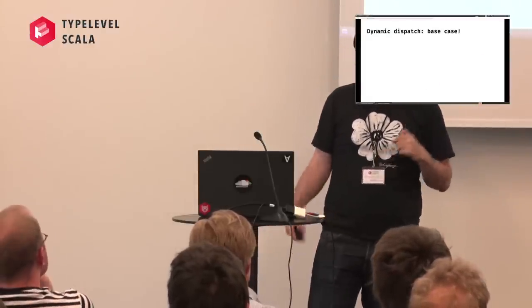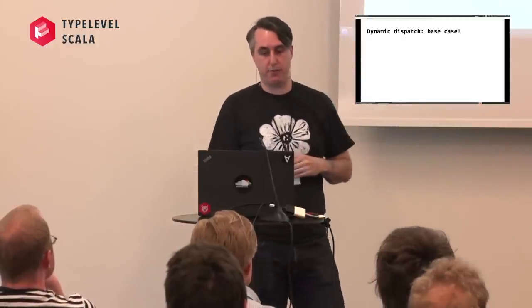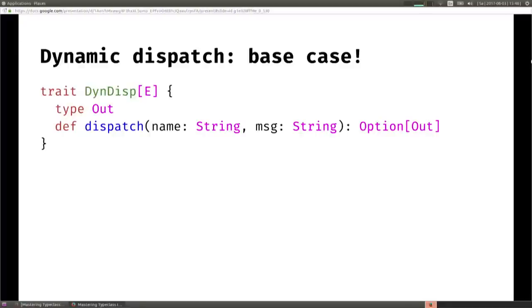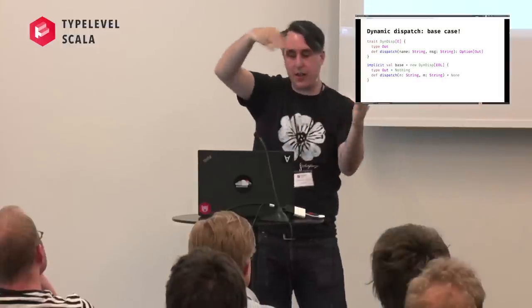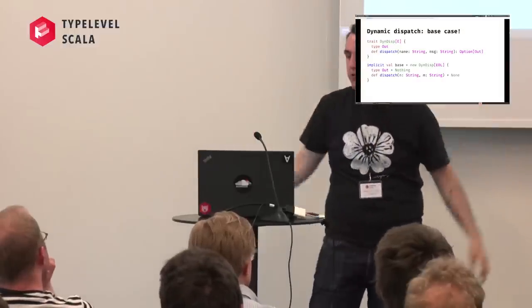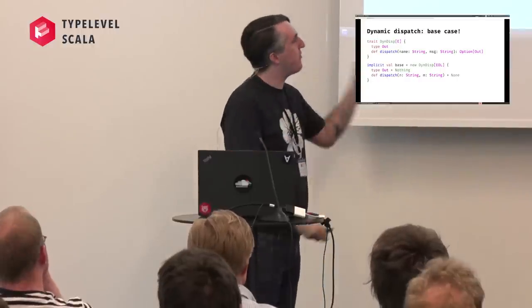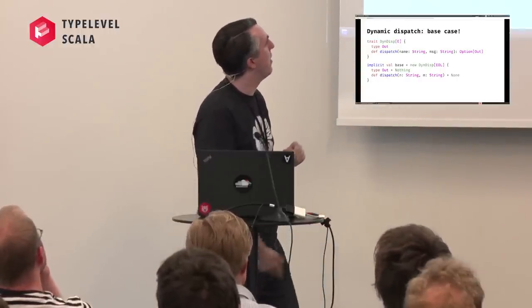We're going to have a type-level list of the bespoke events we're allowed to parse in our event sink, and use that type-level list to derive something that can do the dynamic dispatching. For the base case, we have an instance of DynamicDispatch for EOL, where the output type is Nothing and dispatch just returns None. The idea is that at this point we've checked the name for every single event in our list and nothing matched - we're at the bottom, so we return None. This is really the only implementation that makes sense.